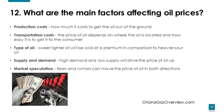What are the main factors affecting oil prices? Production costs — how much it costs to get the oil out of the ground. Transportation costs — the price of oil depends on where the oil is located and how easy it is to get to the consumer. Type of oil — sweet, lighter oil will be sold at a premium compared to heavier sour oil. Supply and demand — high demand and low supply will drive the price of oil up. Market speculations — fears and rumors can move the price of oil in both directions.